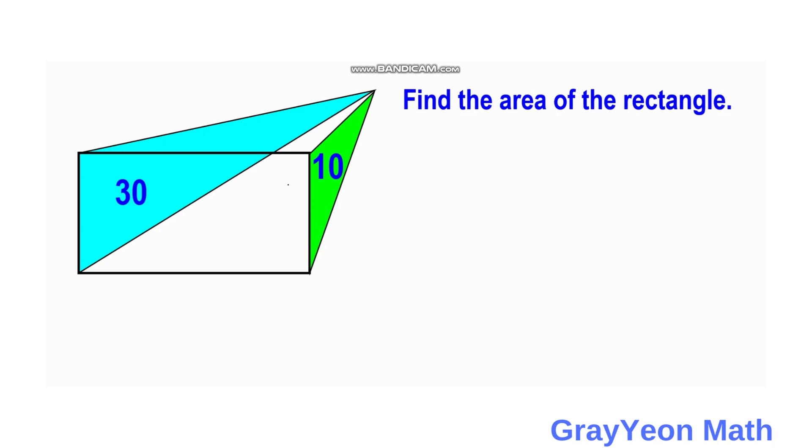Each of the bases of these two triangles lies on the width of the rectangle, and their vertices meet at a single point. We are required to find the area of the rectangle.